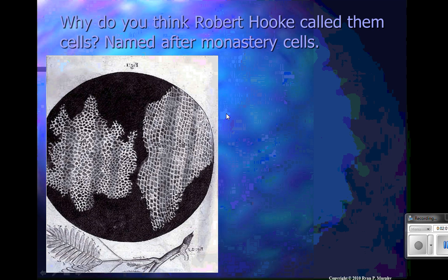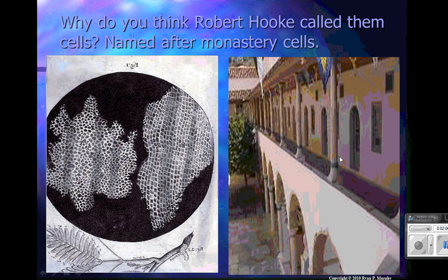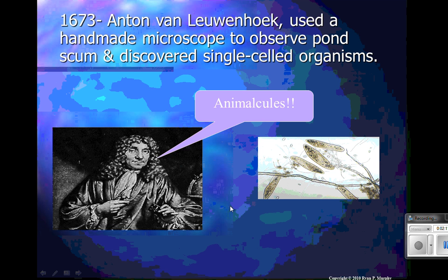A monastery is where monks live — it's kind of like a church — and you can see that they're very simple little cells. Then in 1673, Anton van Leeuwenhoek used a handmade microscope to observe pond scum and discovered single-celled organisms.